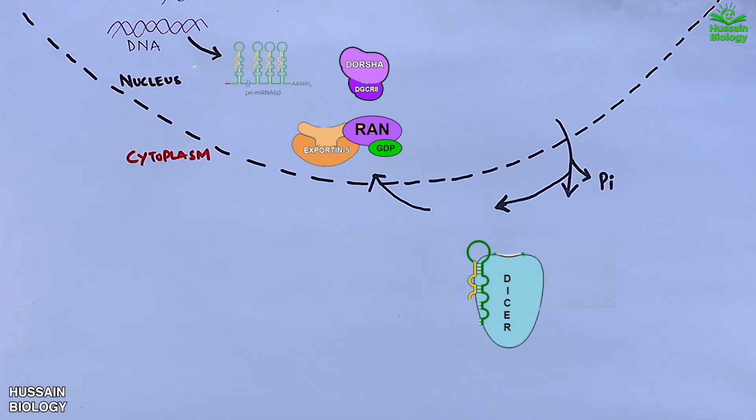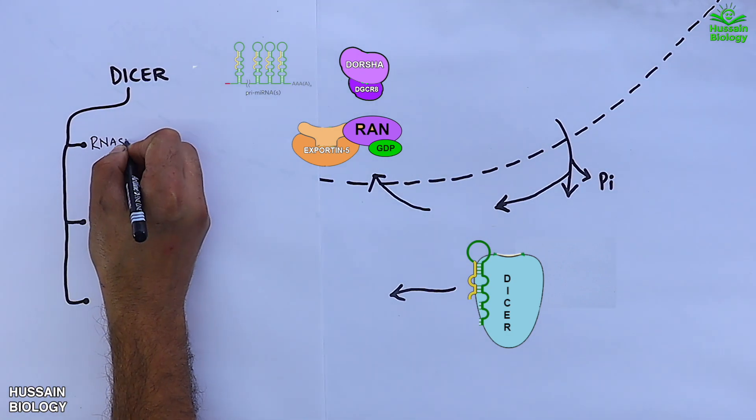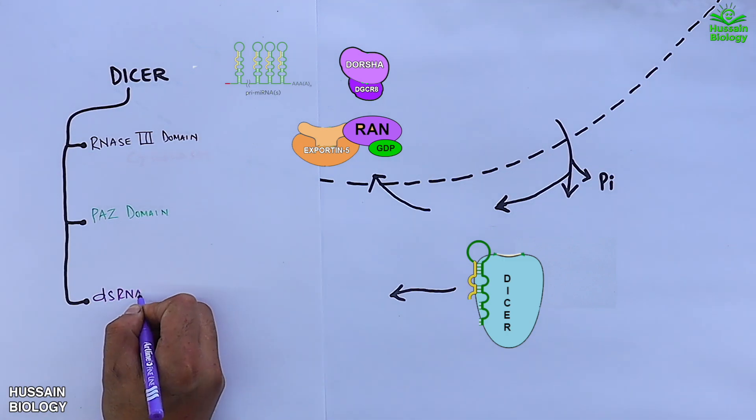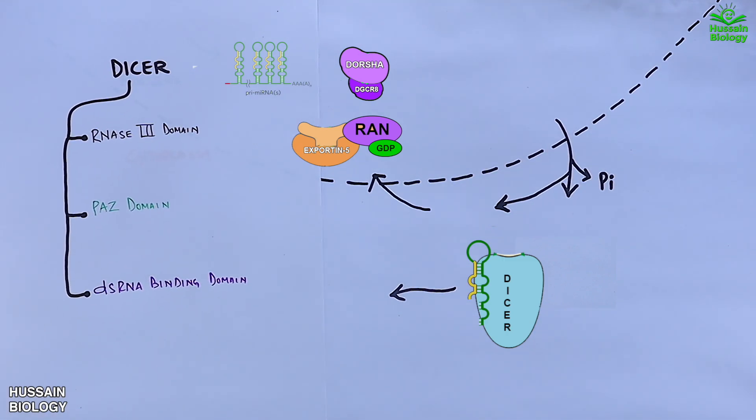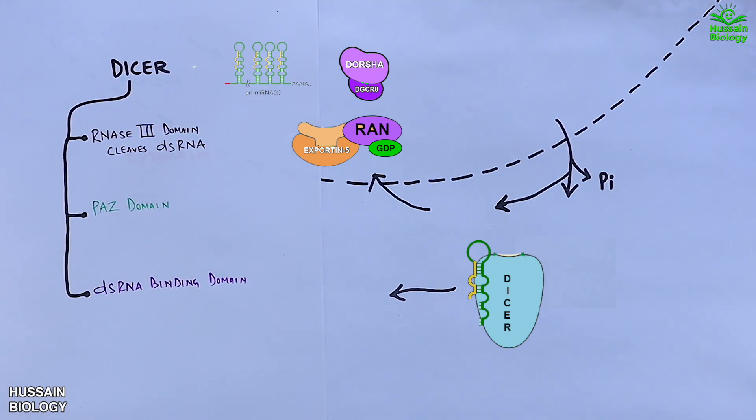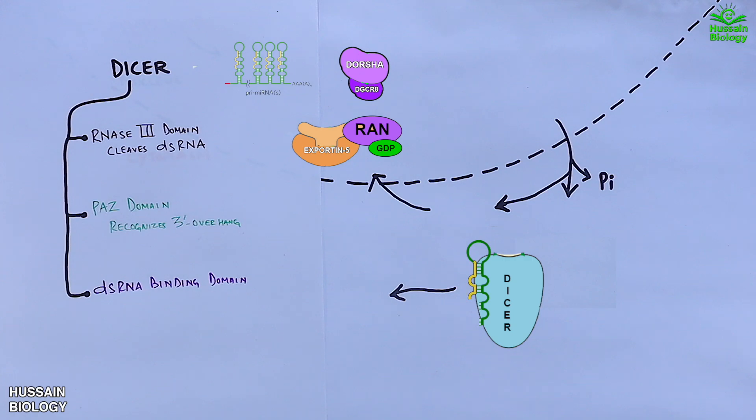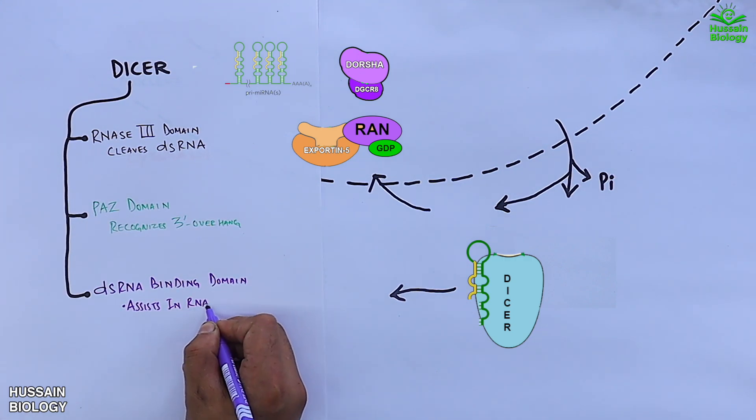DICER protein does three things with its three domains. DICER has an RNase 3 domain, PACT domain, and double-stranded RNA binding domain. The RNase 3 domain cleaves double-stranded RNA. The PACT domain recognizes 3' overhang, and the double-stranded RNA binding domain assists in RNA binding.